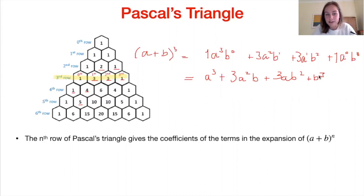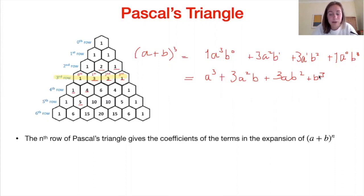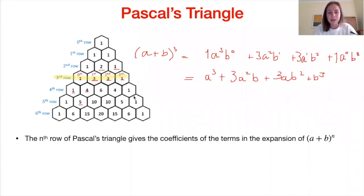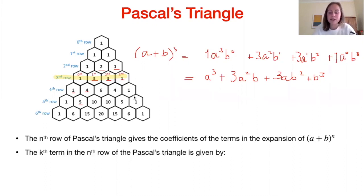That works well for relatively small values of n, but what if n is bigger than 6? Then we'd have to write out seven rows of Pascal's triangle, which isn't time-efficient in an exam and leaves room for mistakes. Ideally we want something to tell us the terms in Pascal's triangle without writing out all the rows.